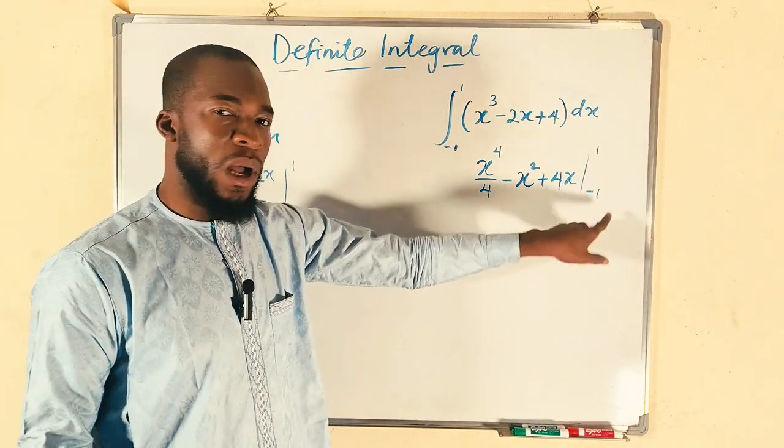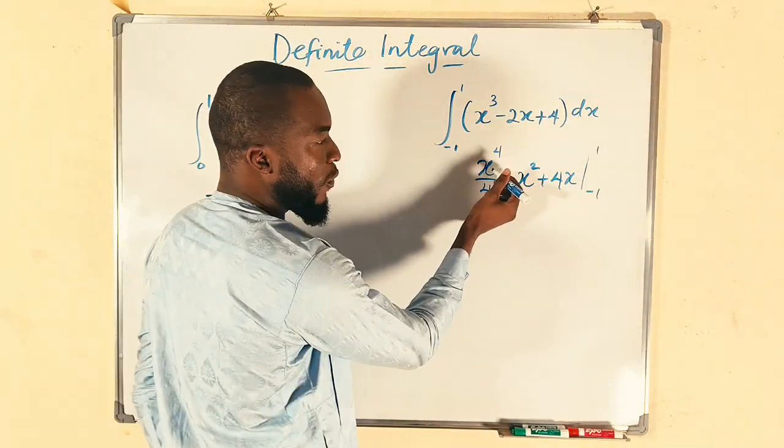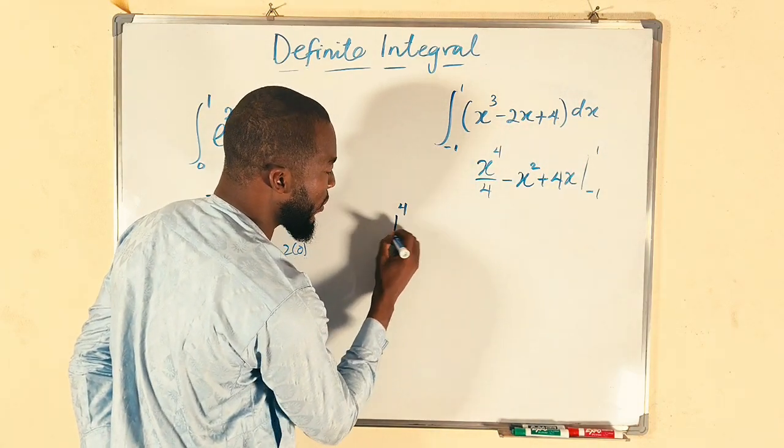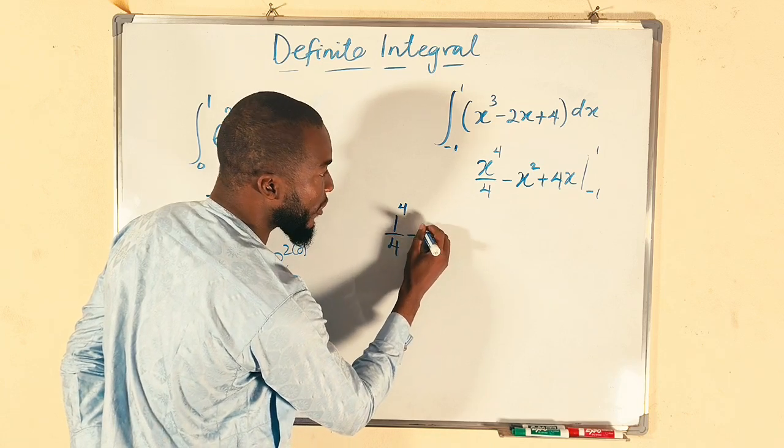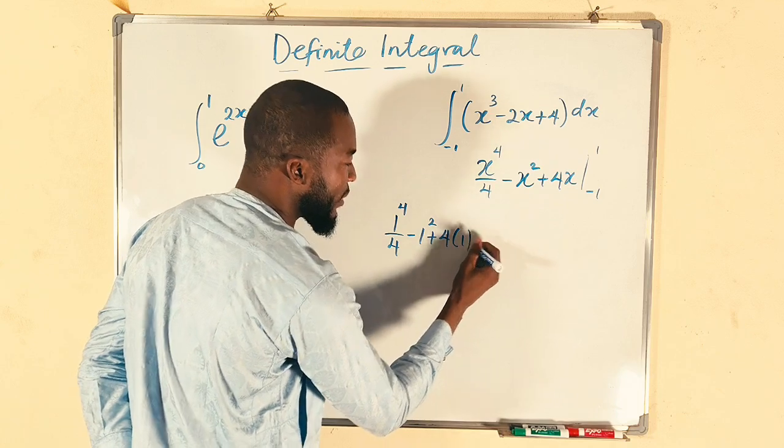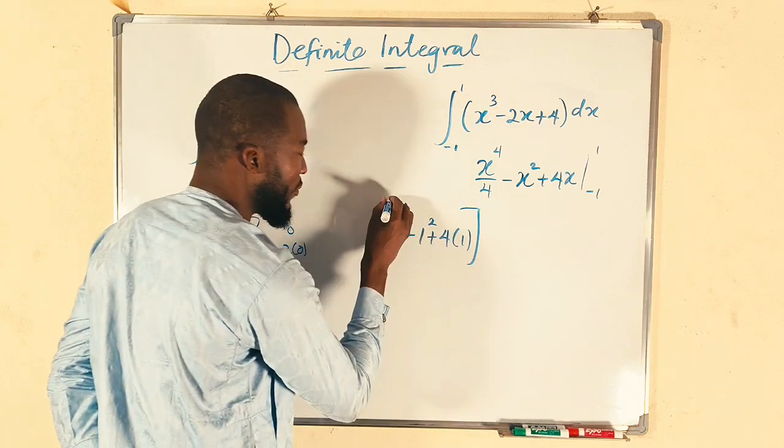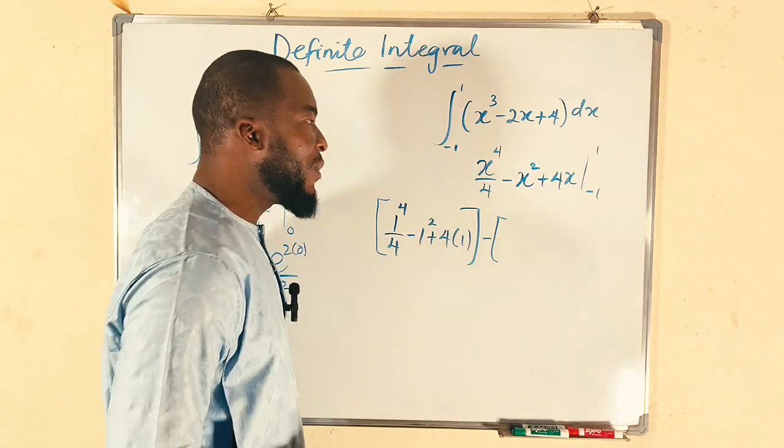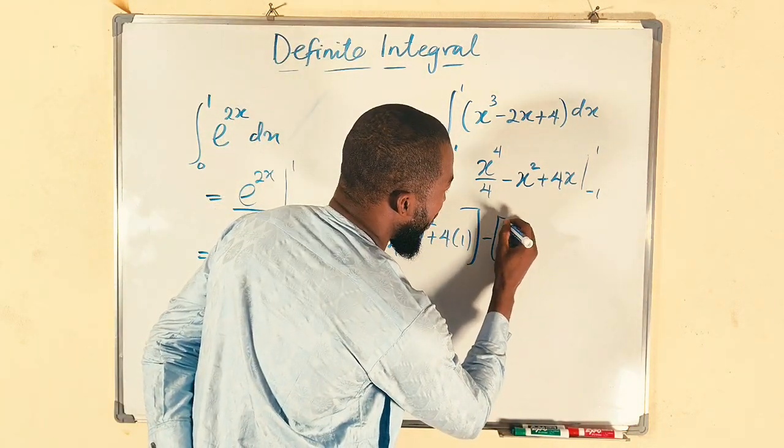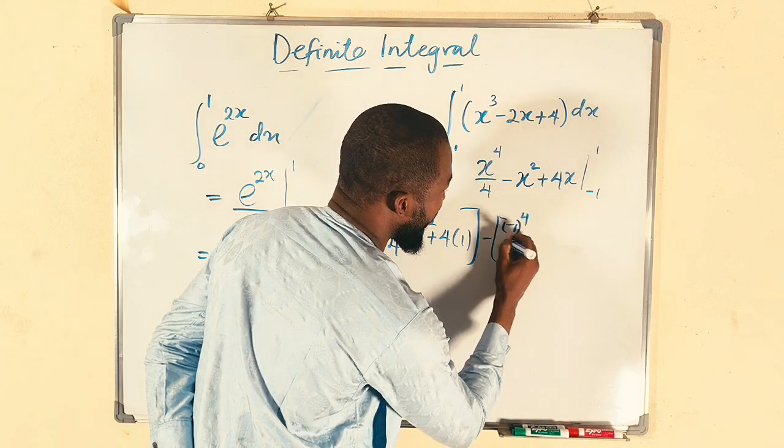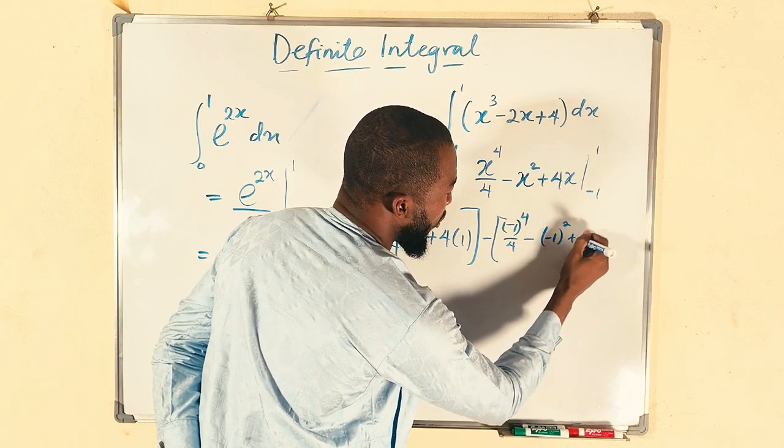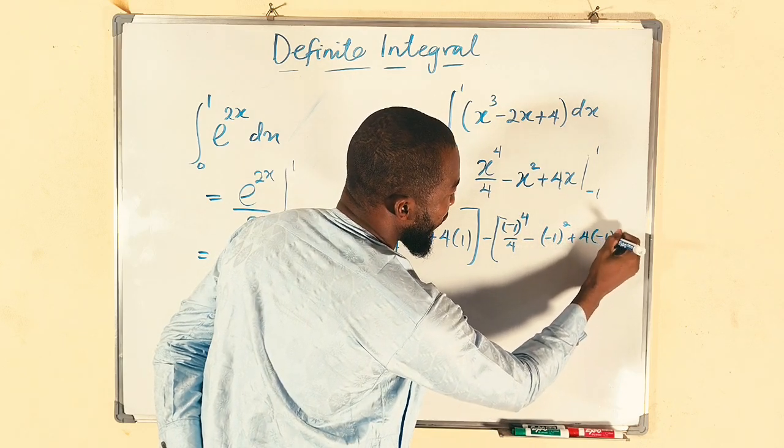So let's substitute upper and the lower limits. When x is 1, we have 1 to the power of 4 divide by 4 minus 1 squared plus 4 multiplied by 1. Then the whole of this, you should subtract the lower limit. That is when we have negative 1. We have negative 1 to the power of 4 divide by 4 minus negative 1 squared plus 4 multiplied by negative 1.